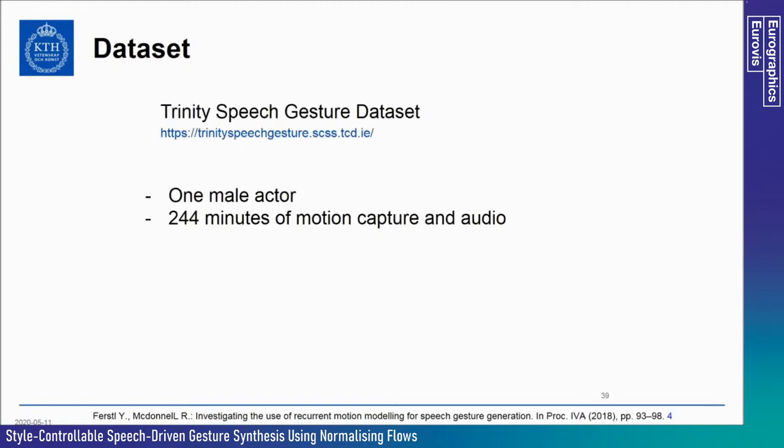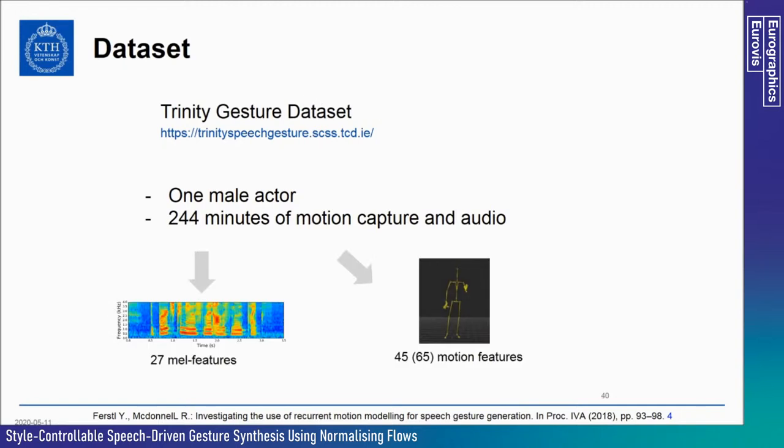For our experiments, we used the Trinity Speech Gesture Dataset recorded at Trinity College Dublin. This dataset contains one male actor speaking freely on different topics, with about four hours of motion capture and audio data. From this we extract 27 mel features for audio and 45 to 65 motion features, depending on whether we synthesize the upper body only or the full body.